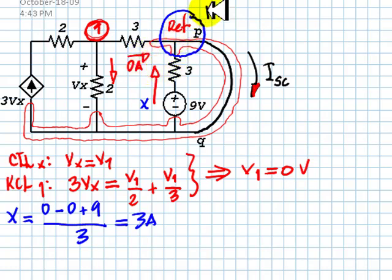KCL in this Gaussian surface tells us 3 amps plus 0 amps means the short circuit current is 3 amps.